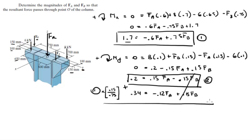When I add them together, I get 0.54 equals 0.03FA. When you solve for FA, you get that FA equals 18 kilonewtons.